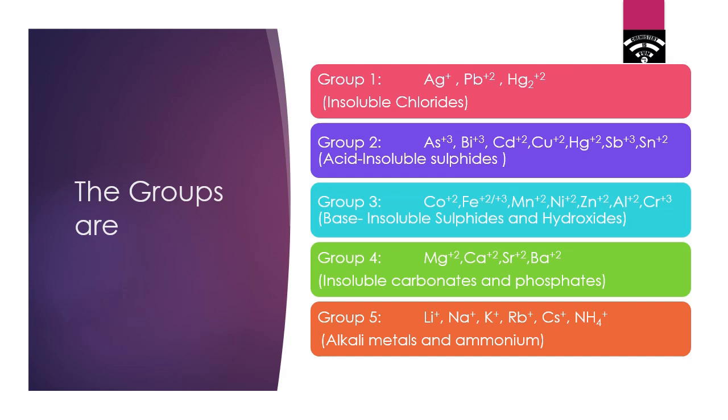Group 2 contains arsenic, bismuth, and other ions. They form insoluble sulfides in acidic media. Group 3 contains cobalt, ferrous, and ferric and other ions, and they form insoluble sulfides and hydroxides in basic media.